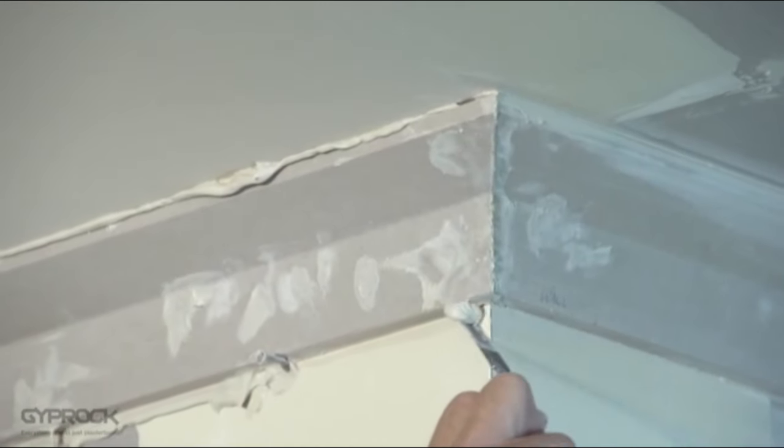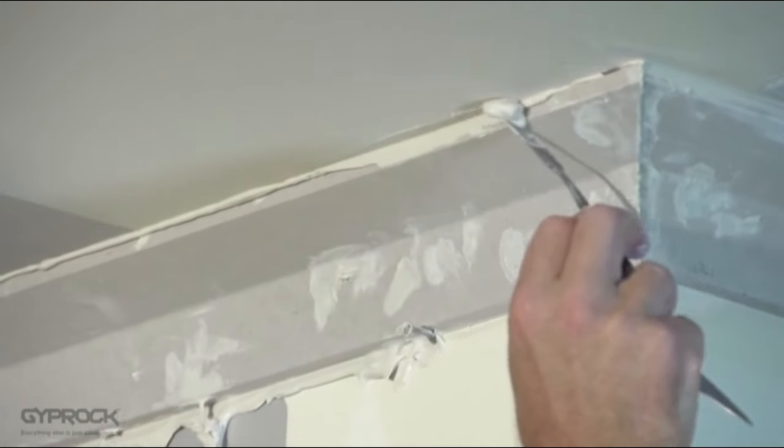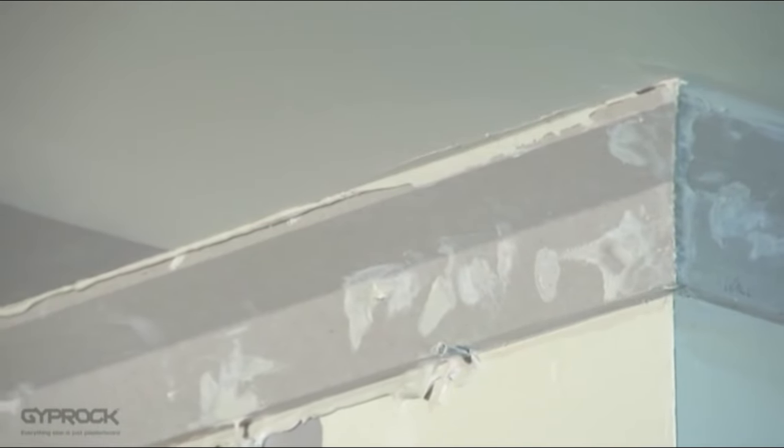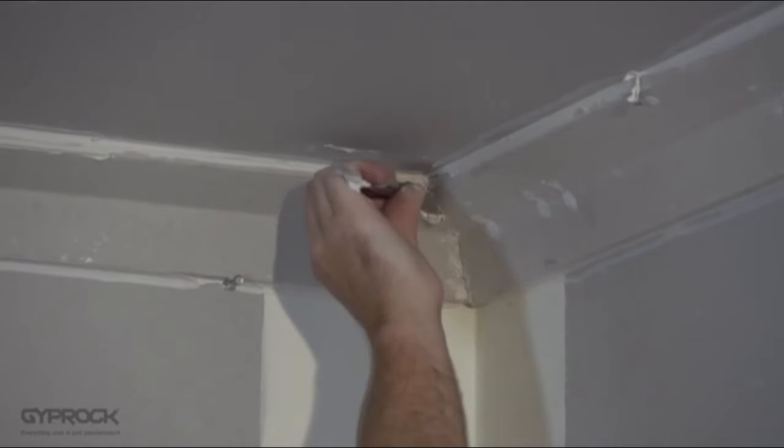Using the broad knife and cornice tool immediately clean off any excess cement. Repeat this process with the rest of your corners lengths making sure you apply corner cement to the mitres and any butt joints.